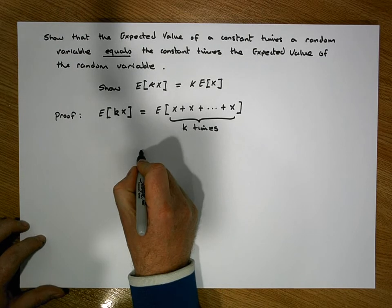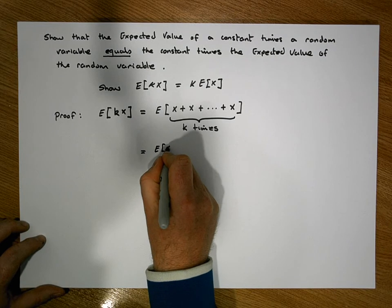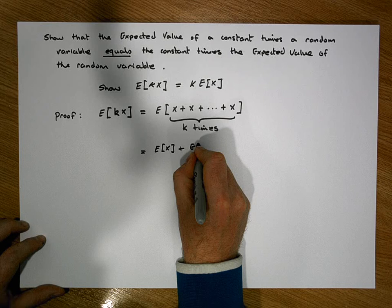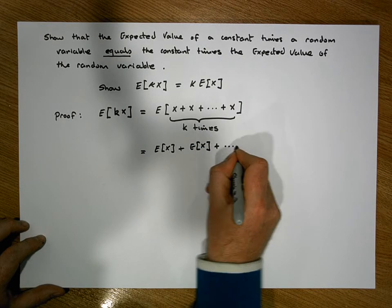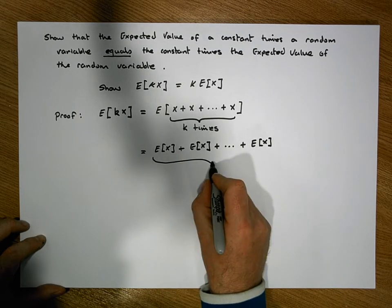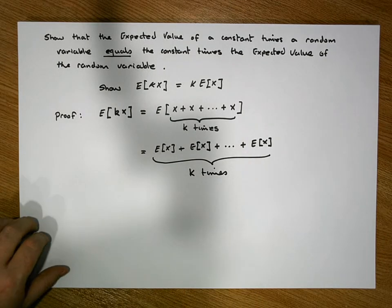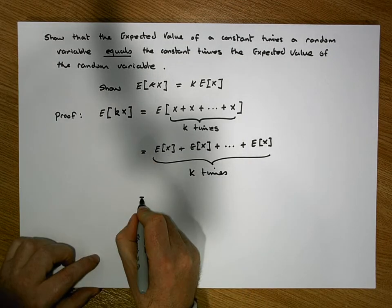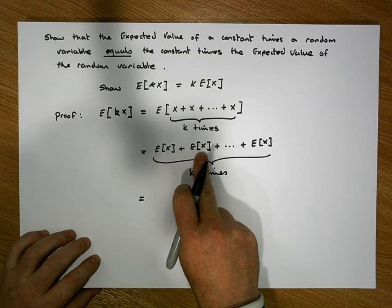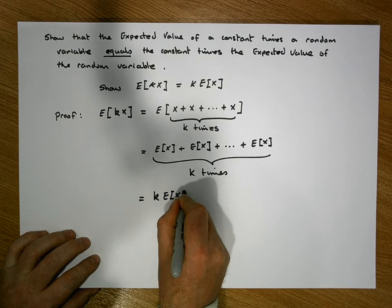So this becomes equal to the summation of the expected values across the observations — the expected value of X, plus the expected value of this random variable, plus all the way through to the expected value of the final random variable. We have k of these, and since the expected value is the same constant summed k times, this is the same as k times the expected value of the random variable.